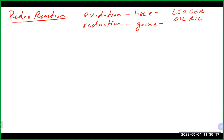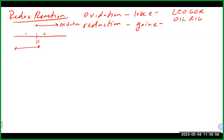For example, as you go from the reactive side to the product side, a very simple way to determine oxidation and reduction is to use a number line and follow the oxidation state of whatever element you're looking at. If that oxidation state moves in the positive direction, it has lost electrons — that's oxidation. If it moves in the negative direction, it has gained electrons — that's reduction.